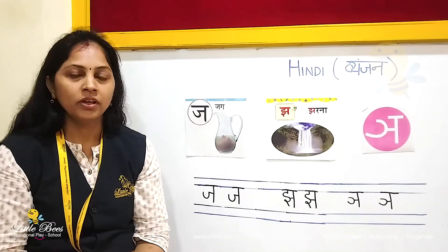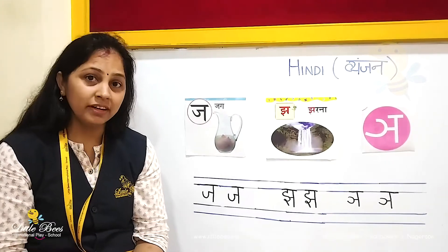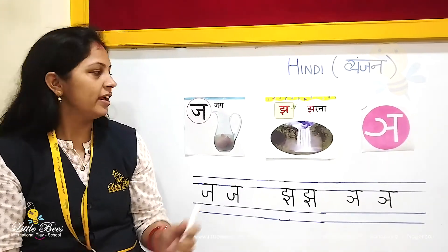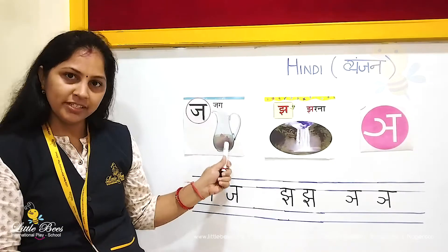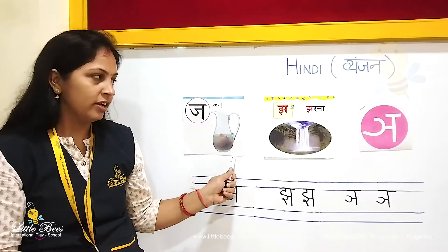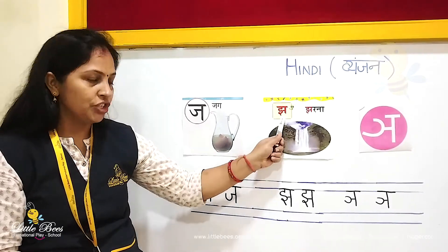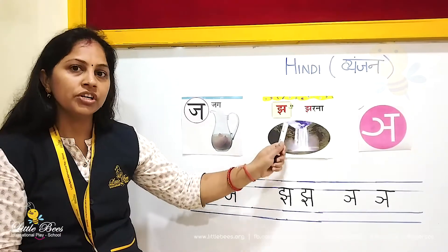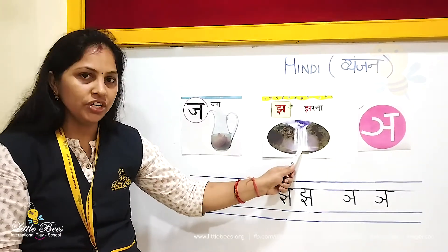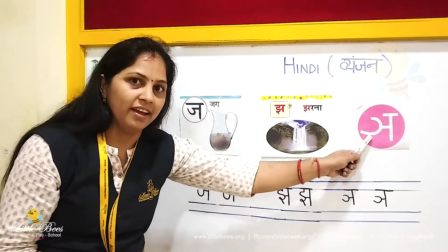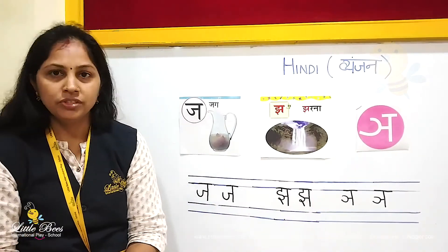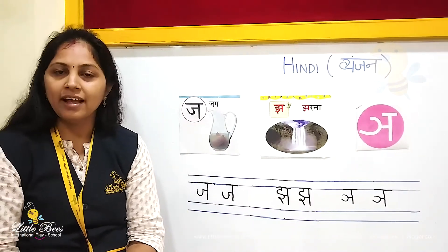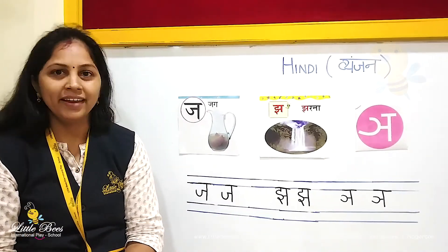So kids, we learnt today: Jha — Jha se Jag; Jha — Jha se Jharana; and Iyan. So we will see you in the next class. Bye.